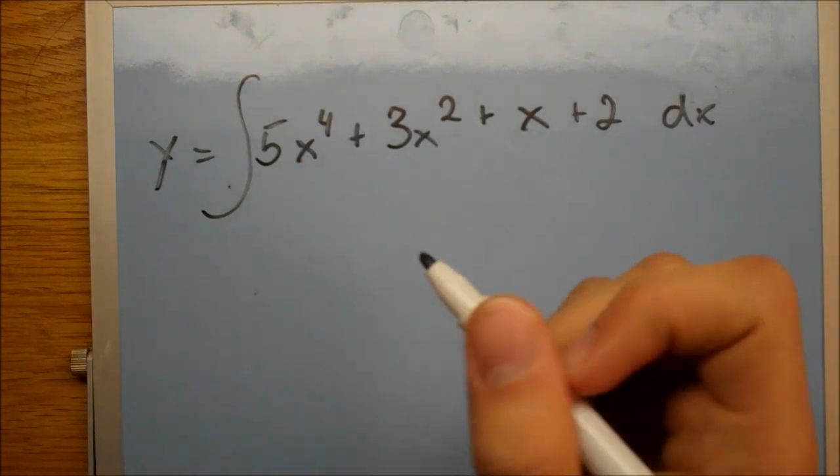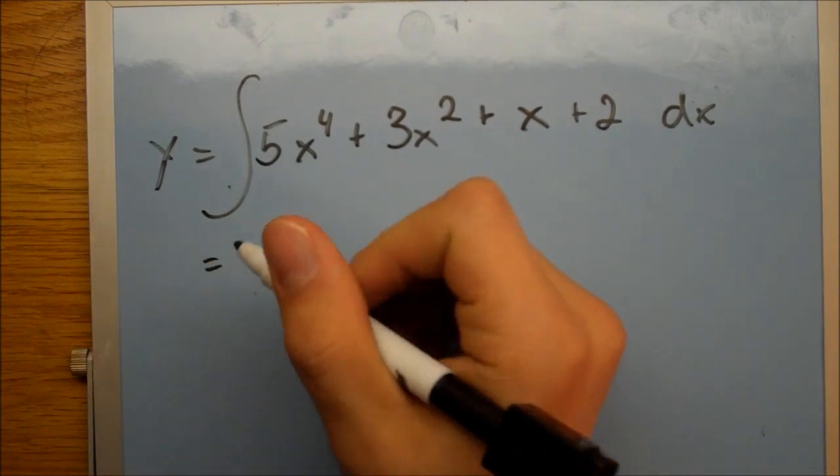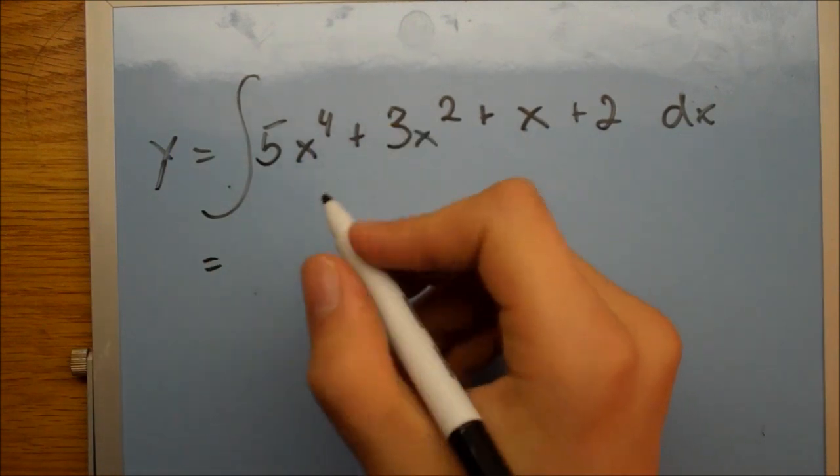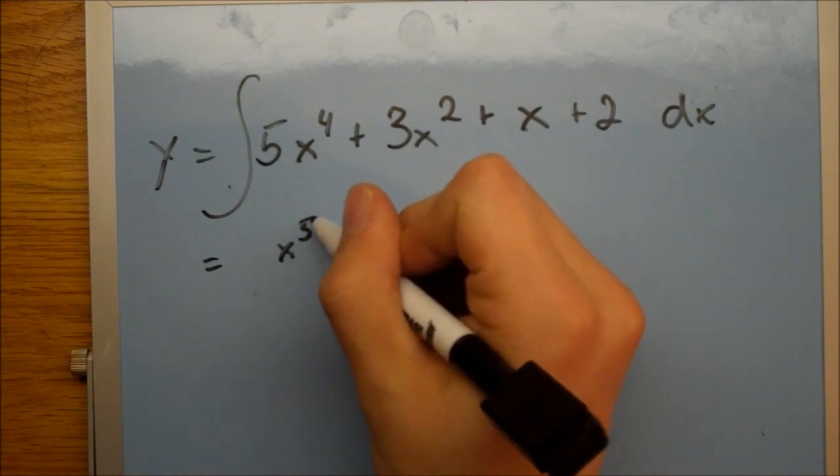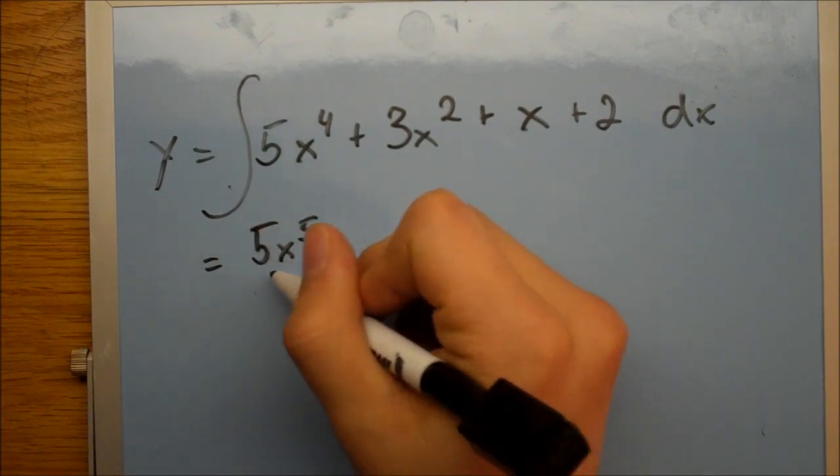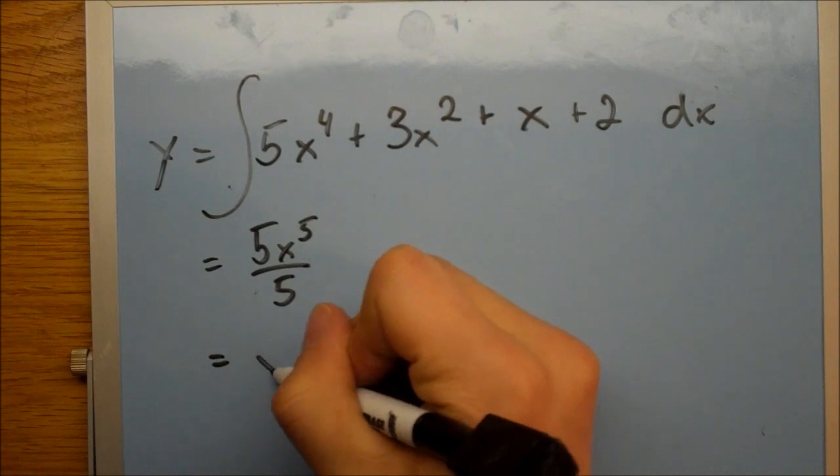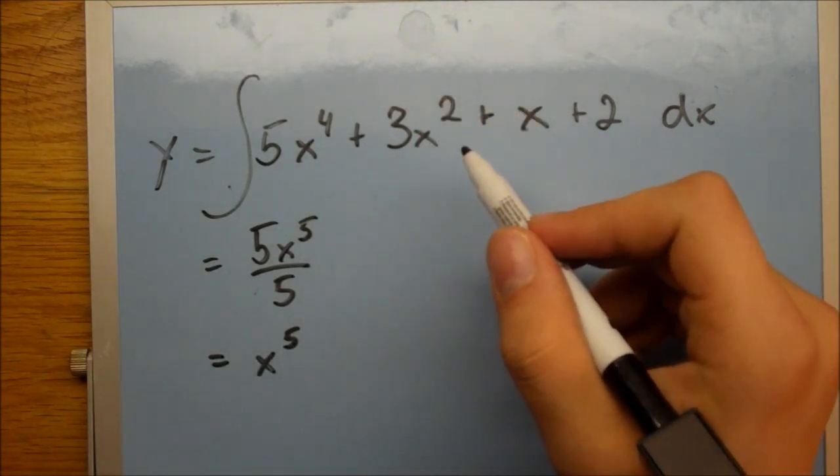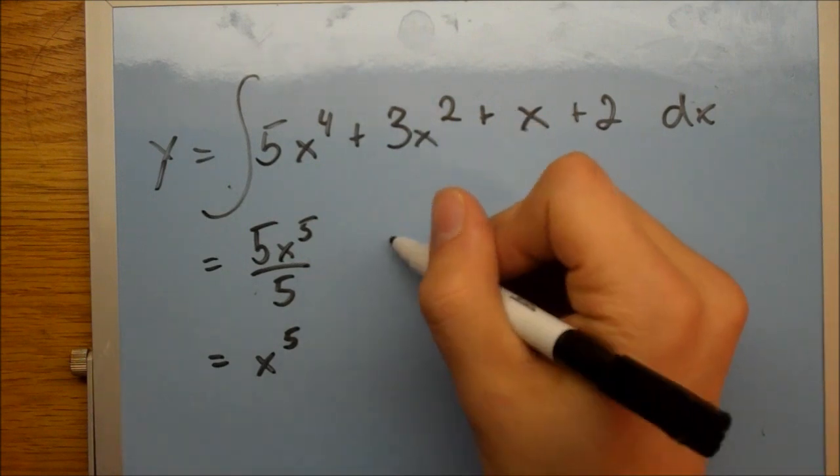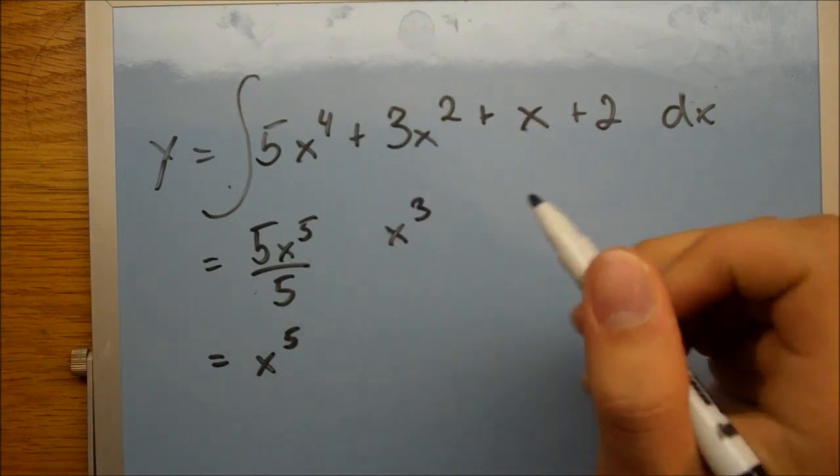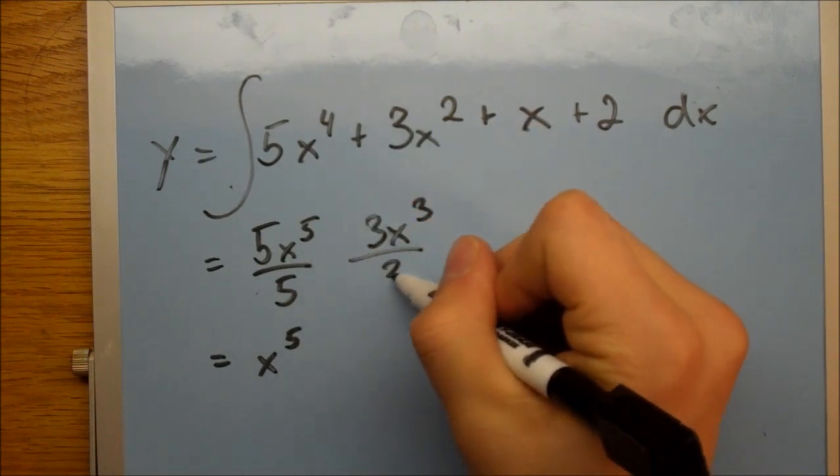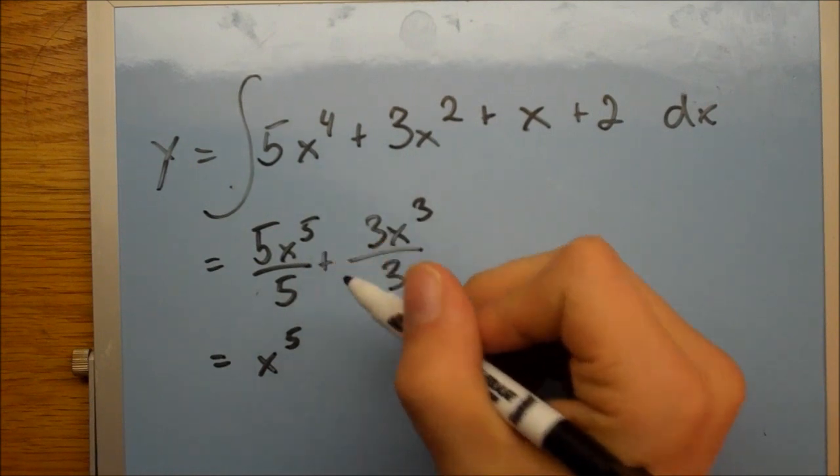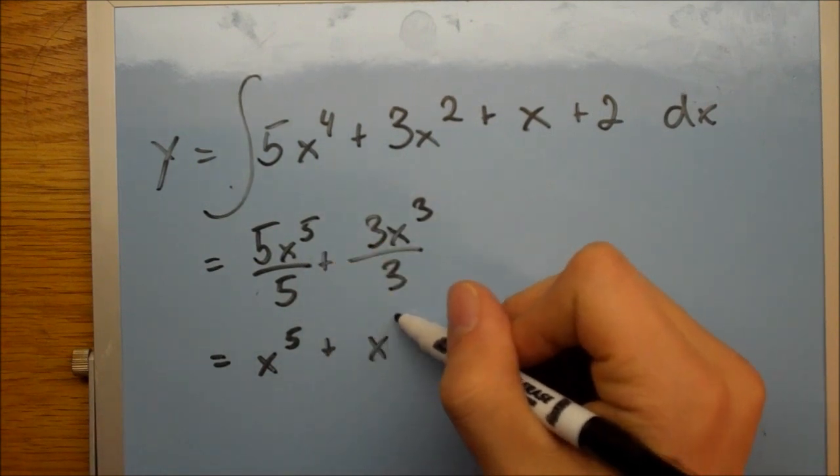So first you have 5x to the 4th, so it's going to become x to the 5th, 5x to the 5th over 5, which is just going to be x to the 5th. Then you have plus 3x squared, so it becomes x cubed over 3, and so you have just x cubed.